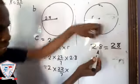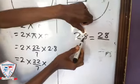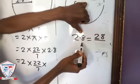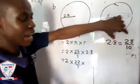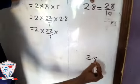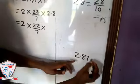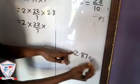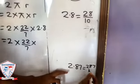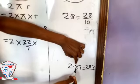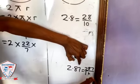This is 2.8. Just ignore the point. Don't write the point - just write your 28 on top, put your line. Now count how many numbers after the decimal point. You have only one number, so that means you divide it by 10. For another example, if you have something like 2.87, just write 287 on top.